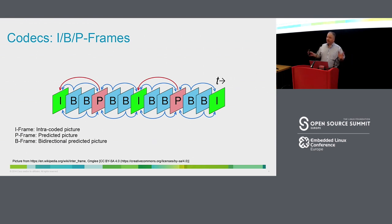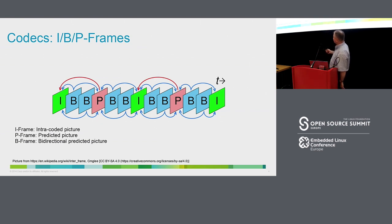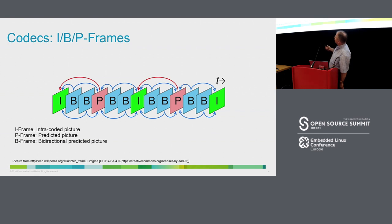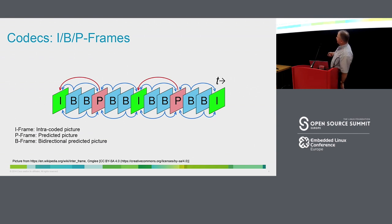One thing that's important for codecs — this is not a course in how codecs work, but this bit is important. You have iframes, which are basically JPEGs — they compress the image independent of any others. For video, you also have predicted pictures, which are basically the diff between an iframe and the picture you want to create. And you have bidirectional frames, which take both the predicted frame and the iframe to build up the picture.